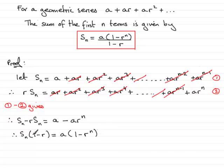So therefore, if I divide both sides now by 1 minus r, I therefore have the sum of the first n terms of the geometric series, Sn, equals a times 1 minus r to the power n, all divided by 1 minus r. And that proves this result.